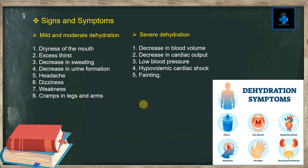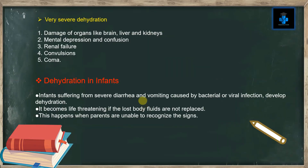Additional signs of severe dehydration include low blood pressure, hypovolemic cardiac shock, and fainting. In the case of very severe dehydration, the signs and symptoms are damage to organs like the brain, liver, and kidneys, mental depression and confusion, renal failure, convulsions, and coma.